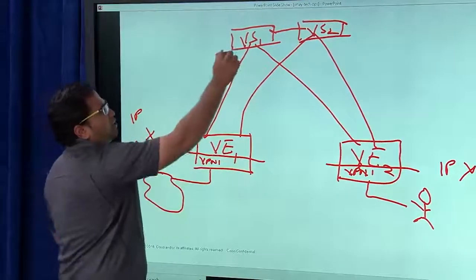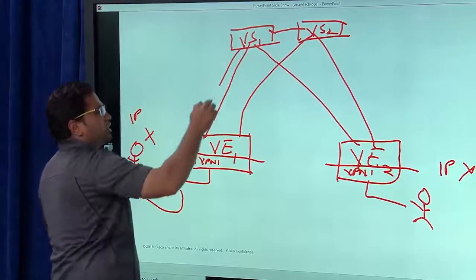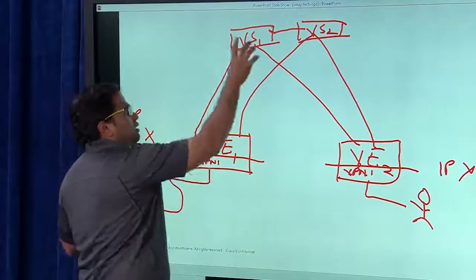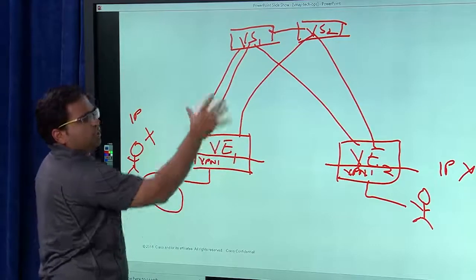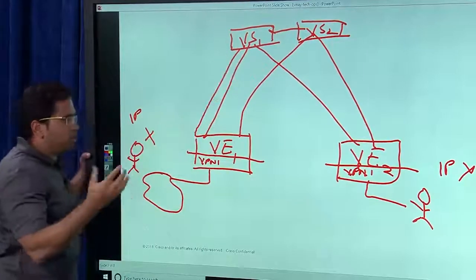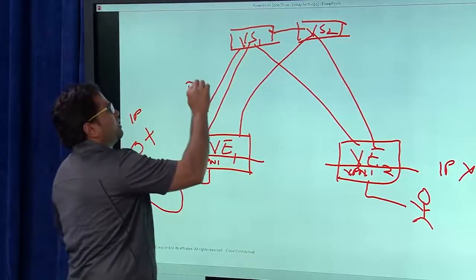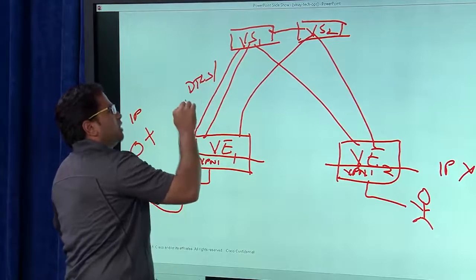What we have, what we had discussed in the previous lecture is we have a tunnel, a control plane set up between the edge and the V-smart using a standards-based protocol. This could be either DTLS or TLS. So before we go further, can you just explain the difference between DTLS and TLS?